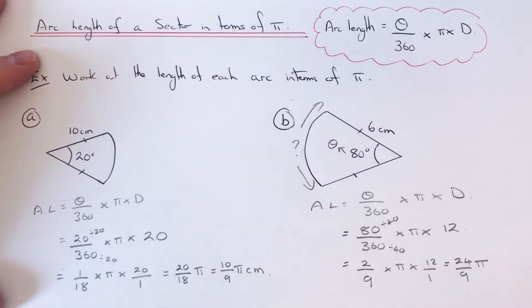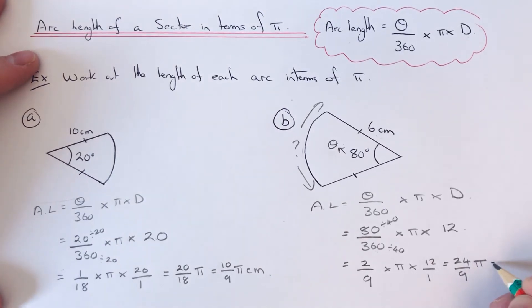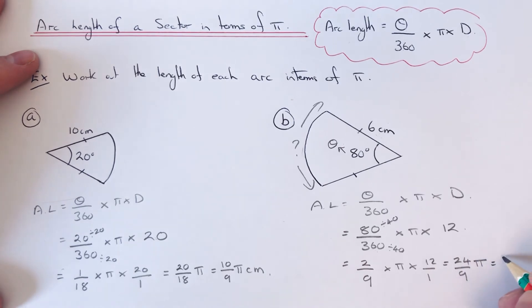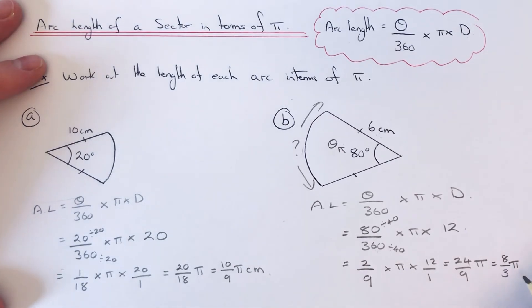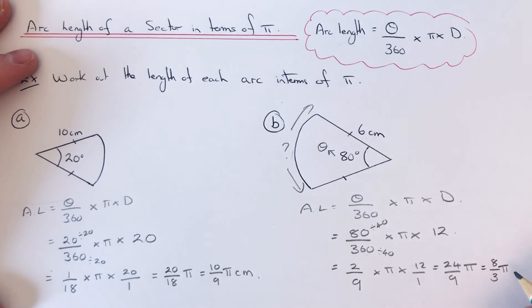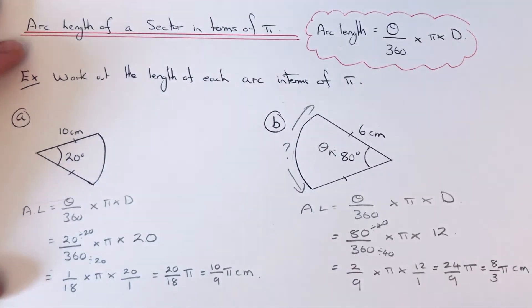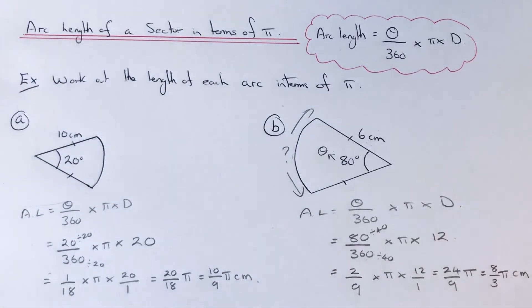We can simplify this fraction a little bit more because they're both multiples of three. 24 ÷ 3 = 8, 9 ÷ 3 = 3, so we get a final answer of 8/3 π. That is our arc length. Make sure you like and subscribe. Thanks for watching, bye bye!